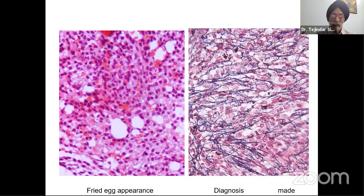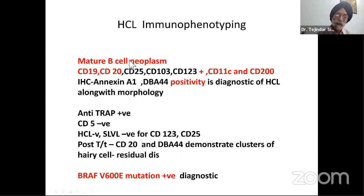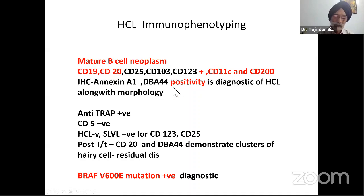The reticulin stain was increased, separating one cell from the other, which is why the nuclei were not superimposed. So we have splenomegaly, pancytopenia, fried egg appearance, increased reticulin — the diagnosis is clear that we were dealing with a case of hairy cell leukemia. This needs to be confirmed by immunophenotyping. Hairy cell leukemia is a mature B-cell neoplasm, so CD19 and CD20 are positive. The characteristic feature on flow cytometry is that these cells are CD25, CD103, and CD123 positive, along with CD11C and CD200.